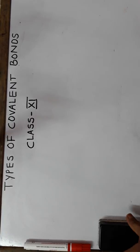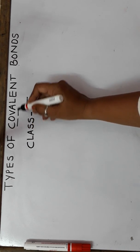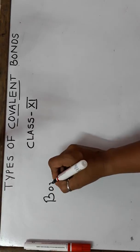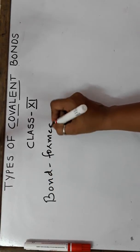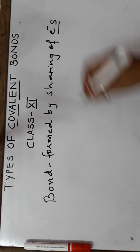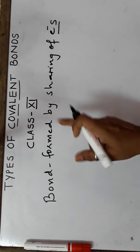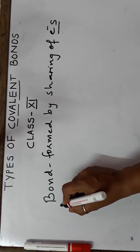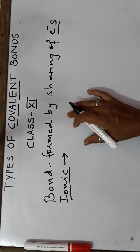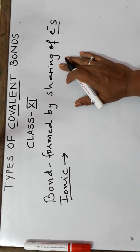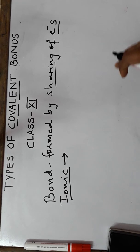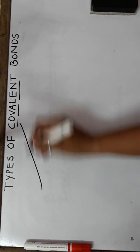First of all, let us understand the meaning of what is a covalent bond. A covalent bond is basically a bond formed by sharing of electrons — you are going to share two electrons. We've also studied about what is an ionic bond in our previous classes, which is a bond formed by loss of electron from one side and acceptance of electron from the other side. Whereas here we are not going to lose anything or gain anything, but we're going to share the electrons.